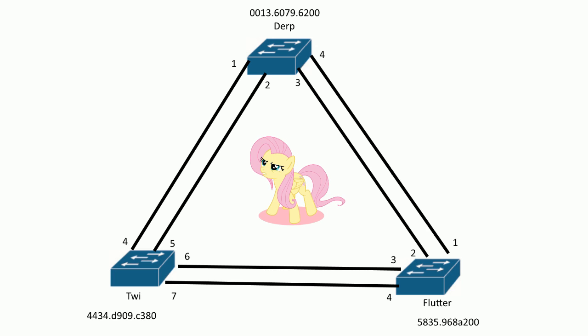Once you find the root bridge, all of those ports become designated right away. The reason why is because you need to find that one path to the root bridge, and if they were all in a blocking state it wouldn't do much good — doesn't make any sense. So right away all of them go into a designated forwarding mode.